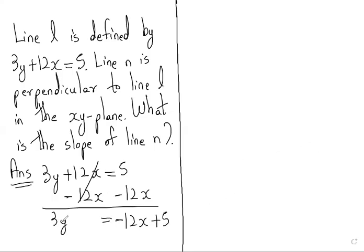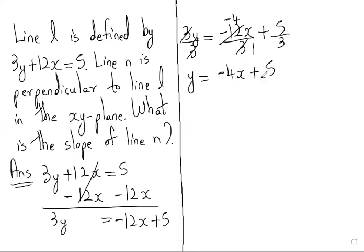Now we want only y here and there is 3y. Between 3 and y there is nothing so it is multiplication. So we will divide by 3 on both sides. 3 divided by 3 is 1, 12 divided by 3 is 4, and we put the minus sign here. Then y is equal to minus 4x plus 5 upon 3.